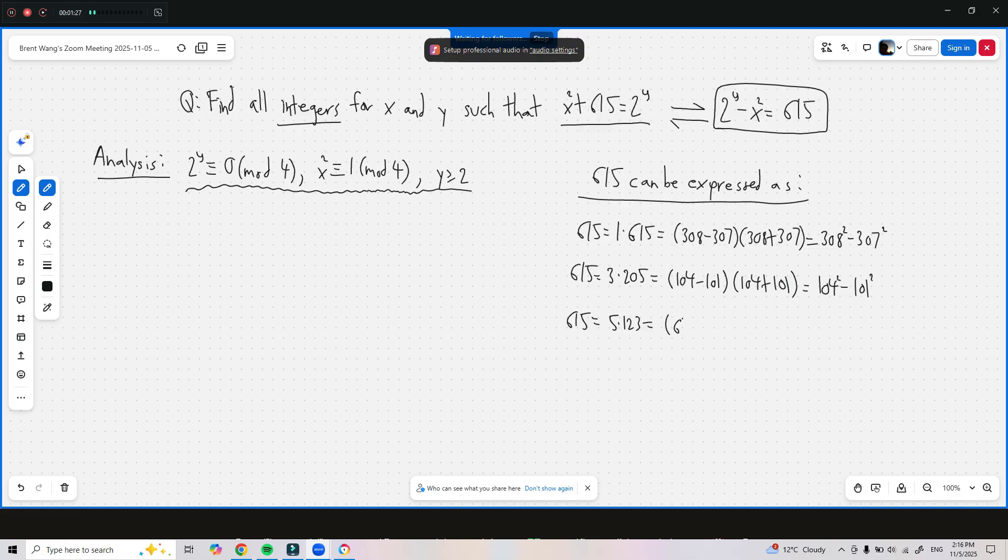615 can equal 5 times 123, which is equal to 64 minus 59 times 64 plus 59, which is equal to 64 squared minus 59 squared.